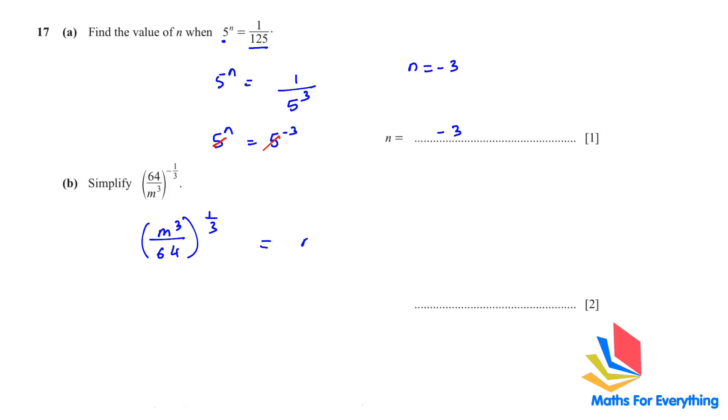This power is for the numerator and the denominator, so we can write m to the power of 3, 1 over 3, and 64, 1 over 3. When you multiply the powers, if there's a bracket, you multiply them. 3 multiplied by 1 over 3 gives you 1, which equals m. And 64 to the power of 1 over 3, when you put it in the calculator, you get 4. So the answer is m over 4.